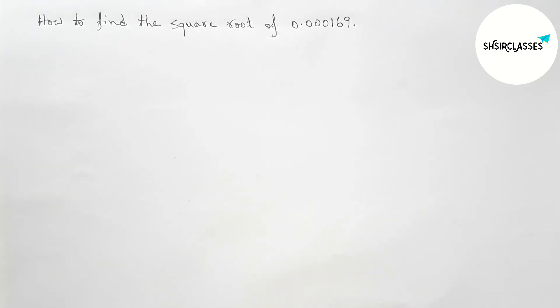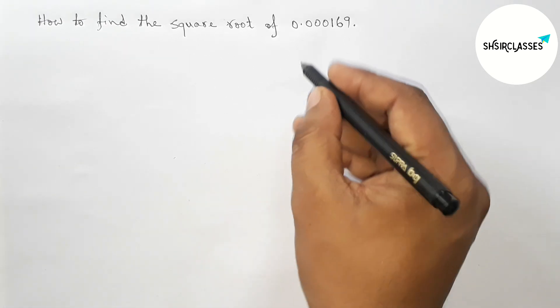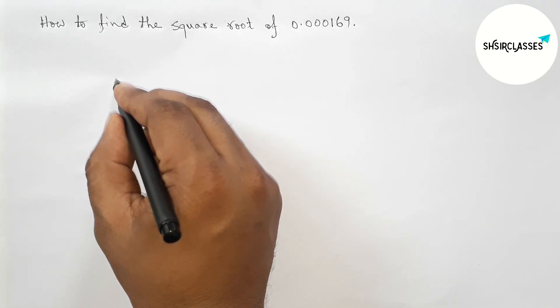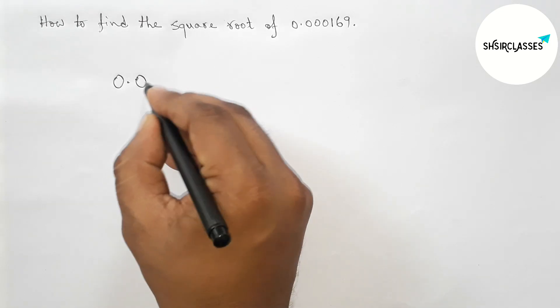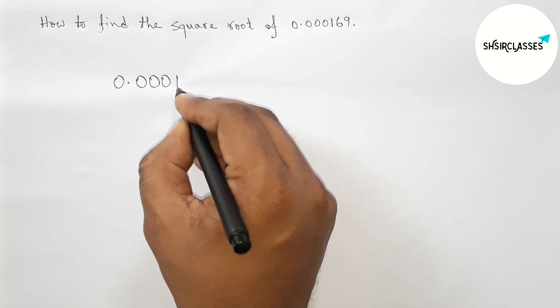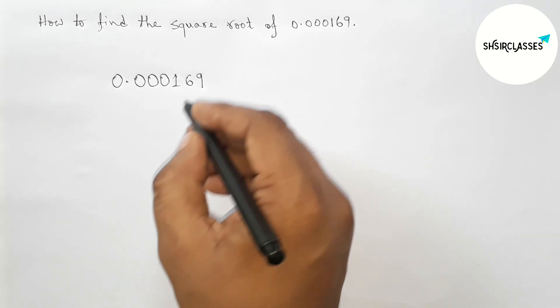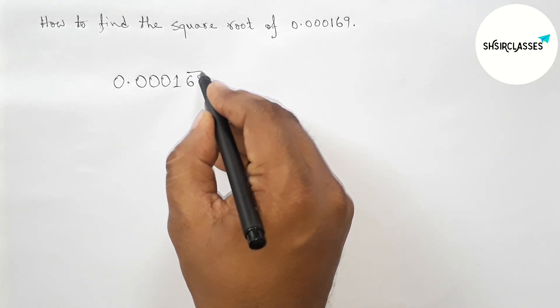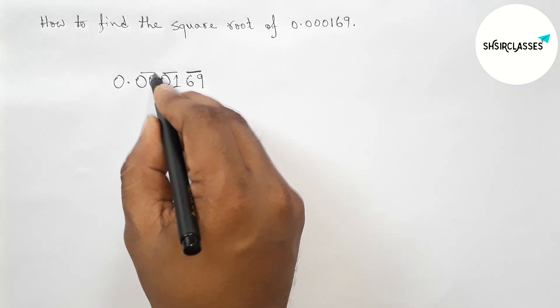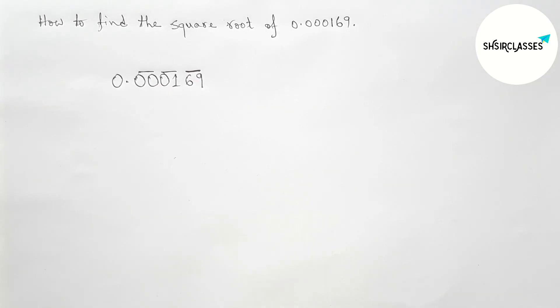First of all, we have to find the square root of this. So first write down here 0.000169. Next, we're making pairs, getting two numbers as one pair. So we got here three pairs of numbers and drawing the division line here on both sides by this way.